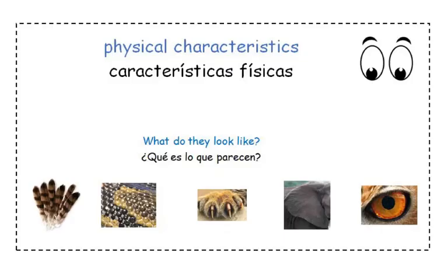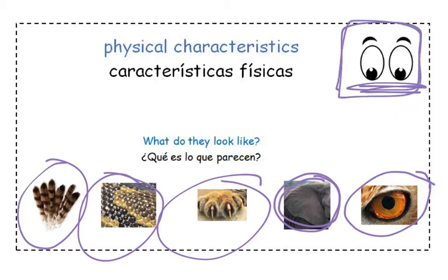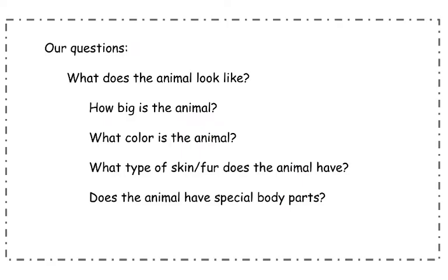So physical characteristics means what do they look like? Do they have feathers or scales? Some animals have claws. Their ears are all different, and their eyes are also really important. When we're thinking about physical characteristics, we think of these specific questions: What does the animal look like? How big is the animal? What color is the animal? What type of skin or fur does the animal have? And does the animal have special body parts?